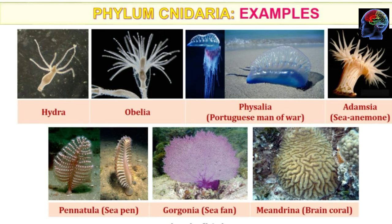Meandrina is called the brain coral. Among these examples, Physalia is called the Portuguese Man of War — this is an important example. The common names written in brackets are also important as direct questions are asked. For example: Portuguese Man of War refers to Physalia; Sea Anemone; brain coral refers to Meandrina; Gorgonia is Sea Fan; and Pennatula is Sea Pen.